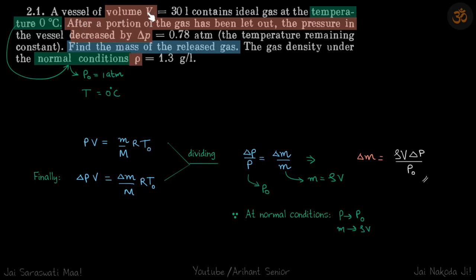We have a vessel of volume V from which some gas has been let out, such that the pressure in the vessel is decreased by delta P.